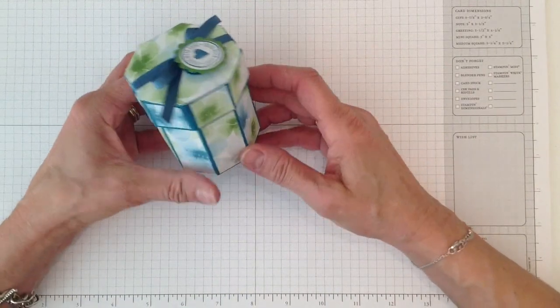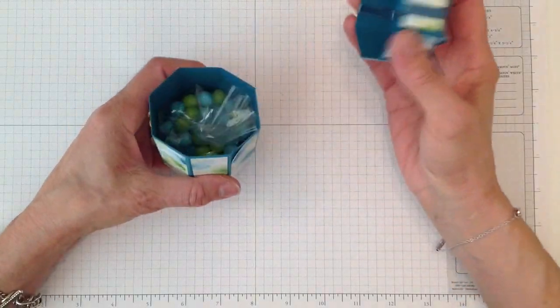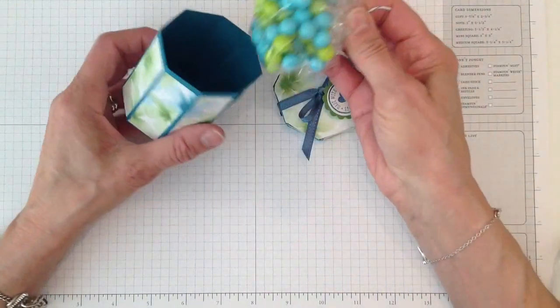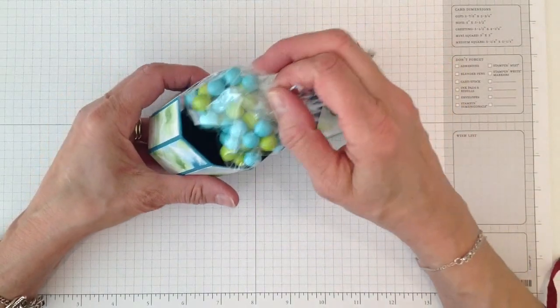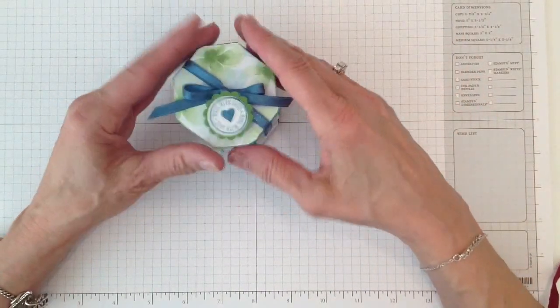I just love the eight-sided boxes, and it has this little lid. I stick some little treats in there and I really love this box. I'm going to show you today how to make this.